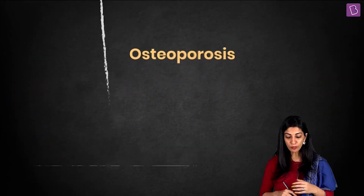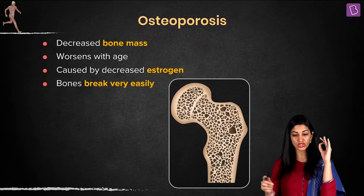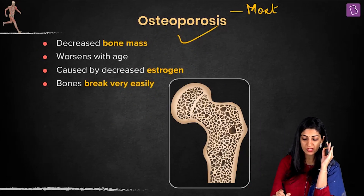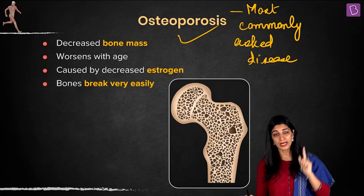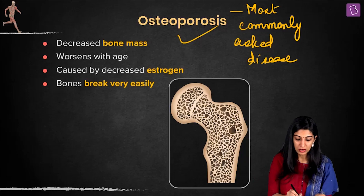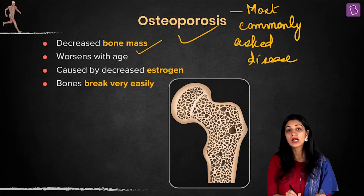Osteoporosis is perhaps the most commonly asked disease in previous year exam papers. The key features to write down are: decreased bone mass and porous bone.